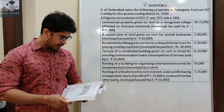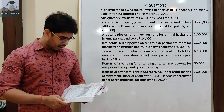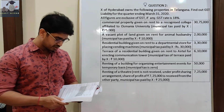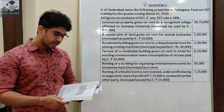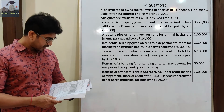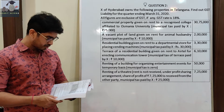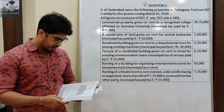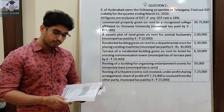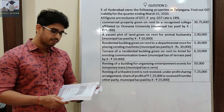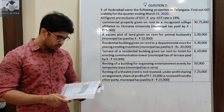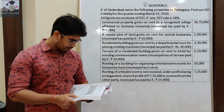Residential building given on rent to a departmental store for placing vending machine. Municipal tax paid by X: Rs. 30,000. Terrace of a residential building given on rent to Airtel for erecting communication tower. Municipal tax of terrace paid by X: Rs. 10,000. Total amount: Rs. 6,10,000.